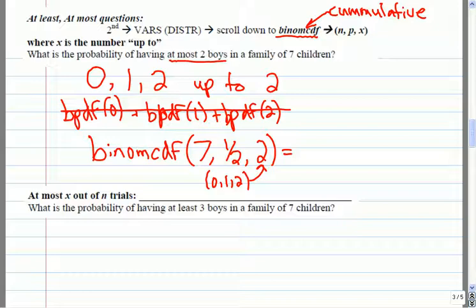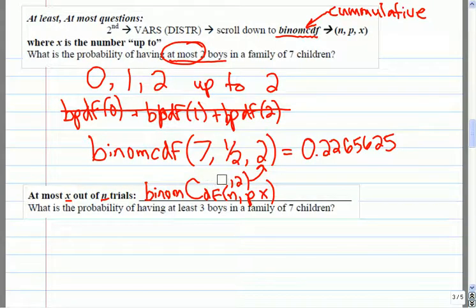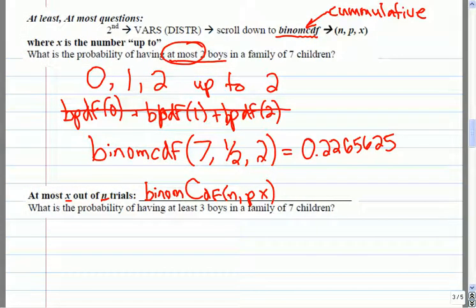Let's see what we get here. BinomCDF: 7, 0.5, and 2. So I get about a 22, 23 percent chance. So when you have a question where you're thinking at most, what you want to do is you're going to use the binomial and make sure it's the CDF. If it's n and x then it'll be n, p, x.